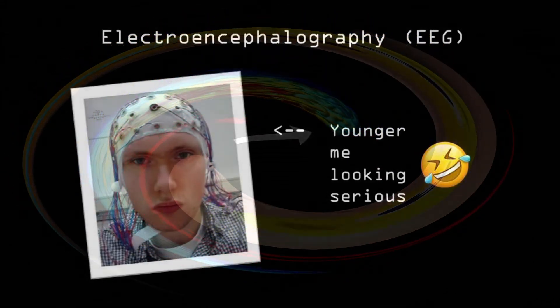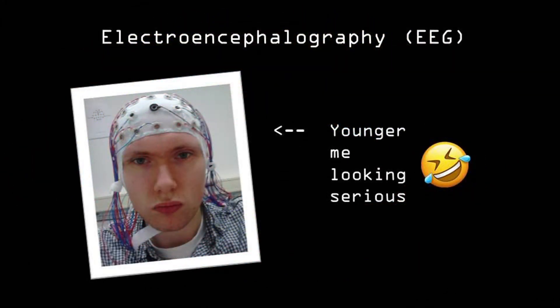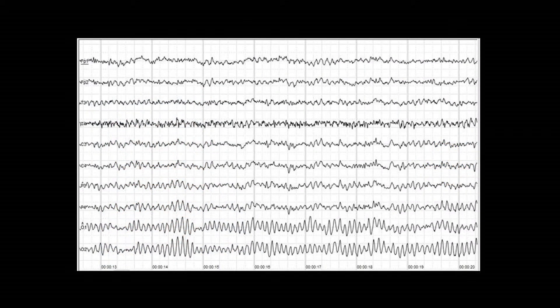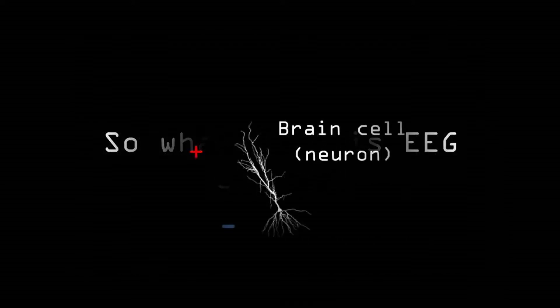For this, we place a number of sensors on the head. The number of sensors can range anywhere between 16 and 128. And when you connect the machine to a computer, you will see a variety of squiggly lines on your screen. But what exactly are those squiggly lines?